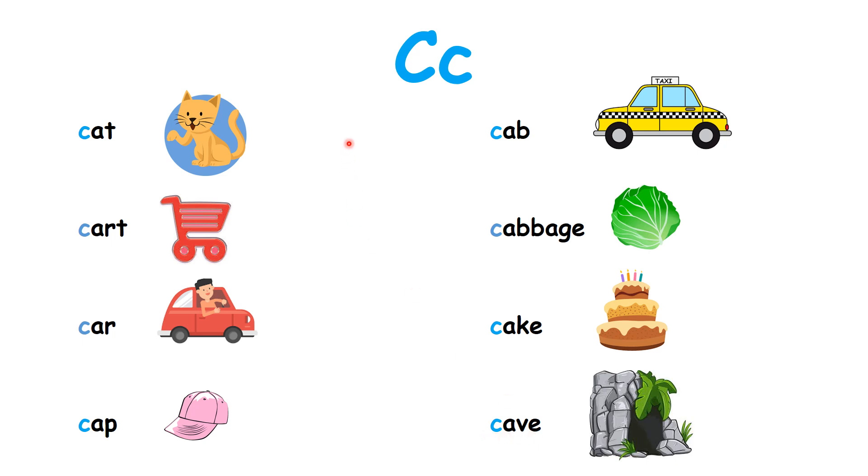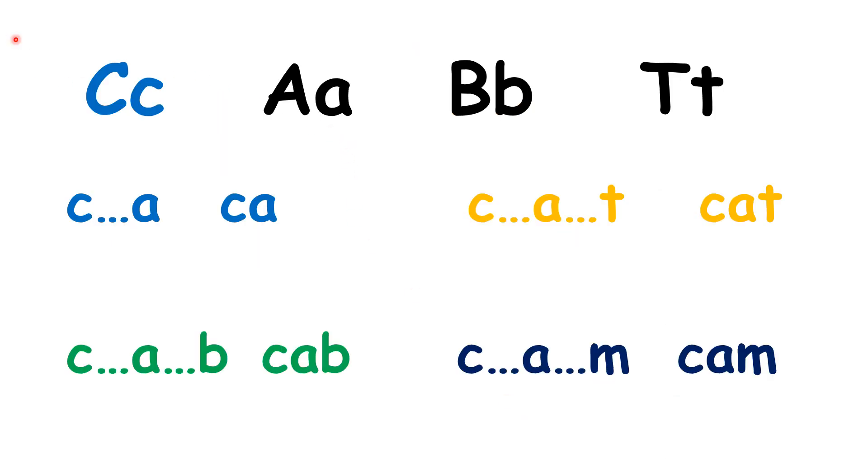All right, good job. Okay, so let's read these words with the beginning sound of kuh. Sound it first. Kuh, ah, kuh. Again, kuh, ah, kuh. At. Cat. At. Cat. Ab. Cab. Again, ab. Cab. Last one, am. Cam. Am. Cam. Now it's your turn, sound it first, read it slowly. Begin.